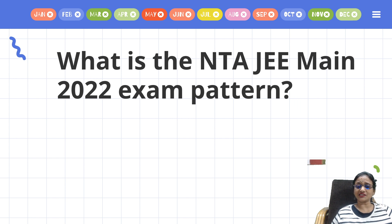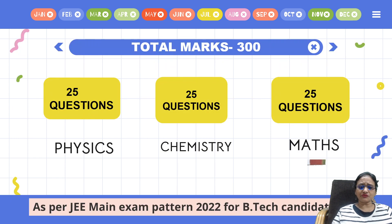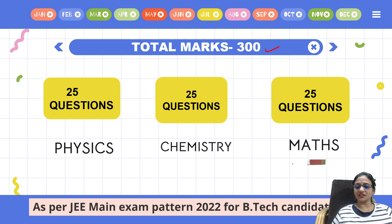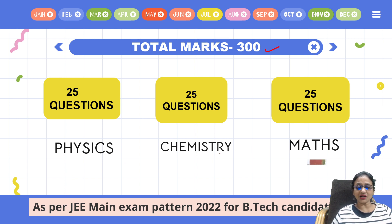The first FAQ we will cover is the NTA JEE Mains 2022 examination pattern. When I look at the exam pattern for 2022, the total number of marks is 300. You have three subjects — Physics, Chemistry, and Maths — each containing 25 questions. This is the new pattern for B.Tech students.